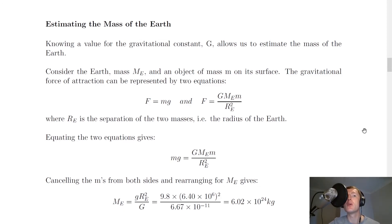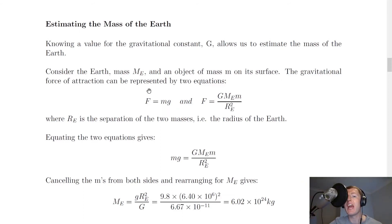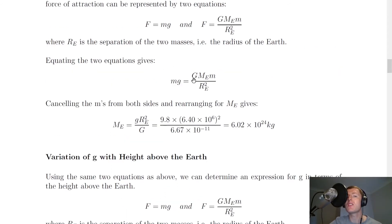Newton's Law of Universal Gravitation can be used to estimate the mass of the Earth. Knowing a value for the gravitational constant G allows us to do this. Consider the Earth of mass ME and an object of mass m on its surface. The gravitational force can be written as F equals mg, and also as F equals G times ME times m over RE squared, where RE is the radius of the Earth. Equating the two and cancelling the small m from both sides, rearranging gives ME equals g times RE squared over big G.